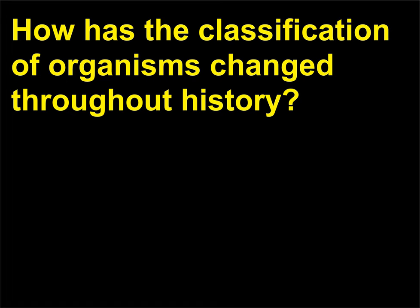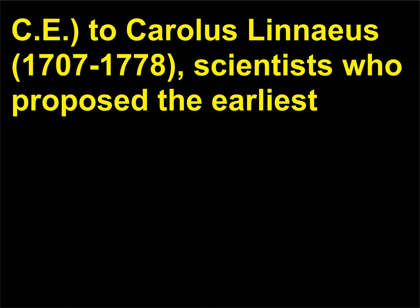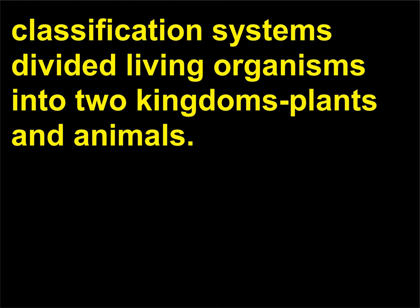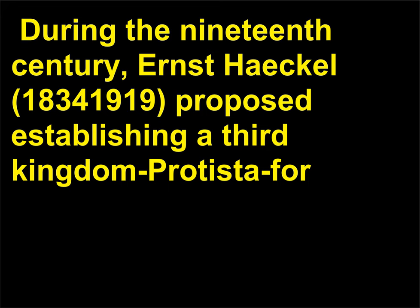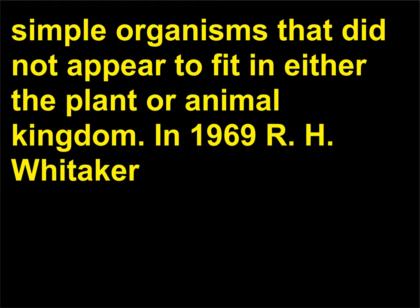How has the classification of organisms changed throughout history? From Aristotle (384–322 B.C.E.) to Carolus Linnaeus (1707–1778), scientists who proposed the earliest classification systems divided living organisms into two kingdoms: plants and animals. During the 19th century, Ernst Haeckel (1834–1919) proposed establishing a third kingdom, Protista, for simple organisms that did not appear to fit in either the plant or animal kingdom.